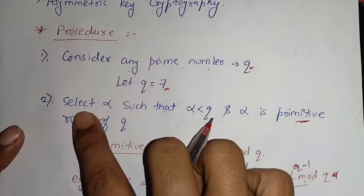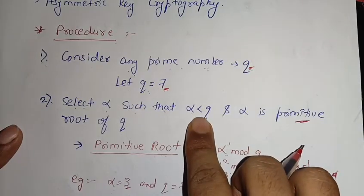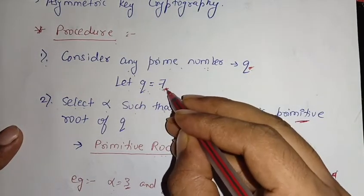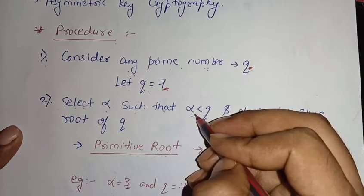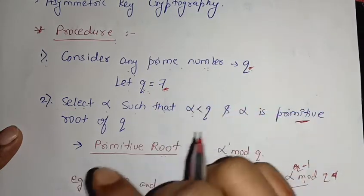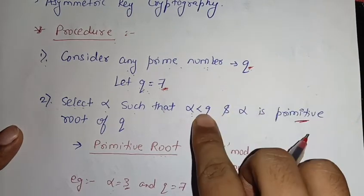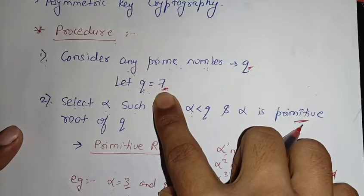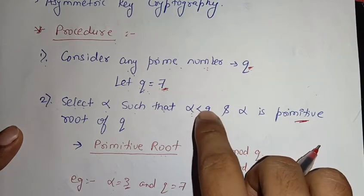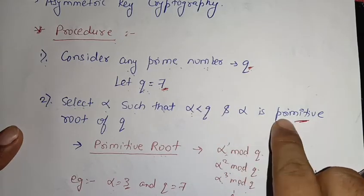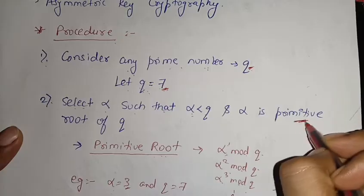The second step is to select alpha such that alpha is less than Q. Since Q is 7, alpha must be less than 7 — it can be 1, 2, 3, 4, 5, or 6, but it should not equal or exceed 7. Additionally, alpha must be a primitive root of Q.